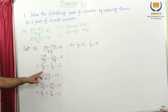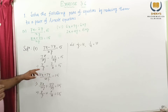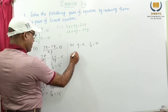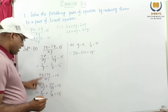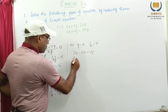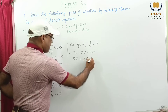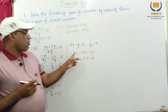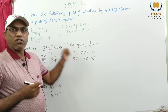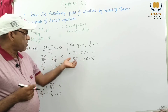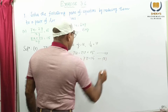So here we get 1 by y, we consider this is u, and 1 by x we consider v. Therefore this will be: 7u minus 2v equal to 5. And this is 8u plus 7v equal to 15. Now their coefficients are different — this is 8, this one 7; this is 2, this is 7. So we take the elimination method. This is number 1, this is number 2.